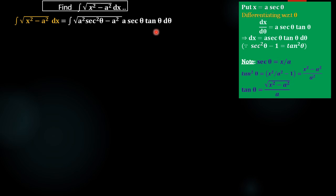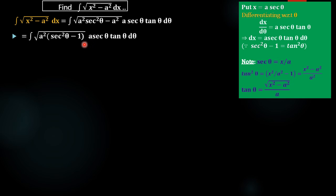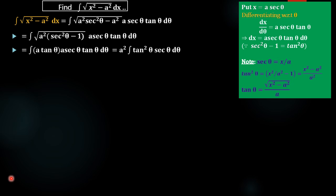We are taking x = a·sec θ because if we take a² outside, we get sec²θ - 1 inside the square root. Since sec²θ - 1 = tan²θ, we can take a·tan θ outside the square root. Substituting x = a·sec θ, we get a·tan θ · a·sec θ·tan θ dθ, which gives a²·tan²θ·sec θ dθ.